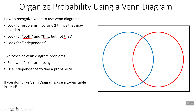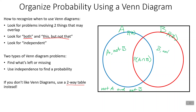If you don't like Venn diagrams, you can always use a two-way table — all Venn diagram problems can also be done with a two-way table. So let's say this circle is set A and this is set B. The whole circle A is the probability of A, the whole circle B is the probability of B, the middle is the probability of A and B, and the outside is not A and not B. We always have four sections to fill in.